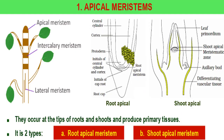Apical meristem occurs at the tips of roots and shoots and produces primary tissues. This type of apical meristem is found on the tip of both root and the shoot. So we can say apical meristem is of two types: root apical meristem and shoot apical meristem.